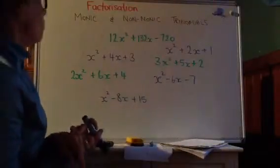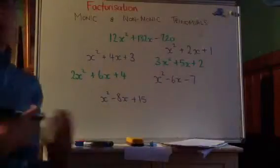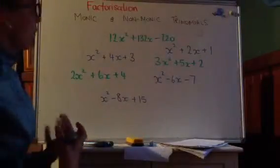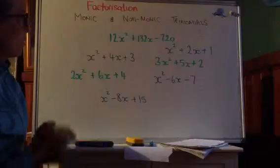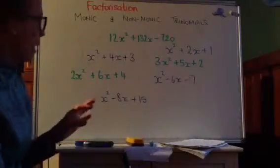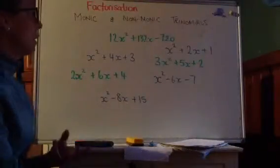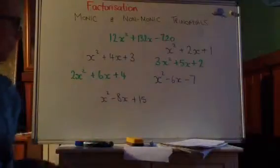So monic is basically a word for one whereas non-monic means not one. And if you look at the screen you'll see that there's seven different expressions here, and all the blue ones have something similar about them and all the green ones have something similar about them.